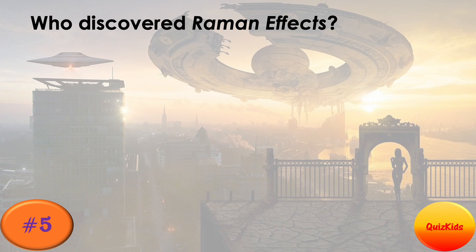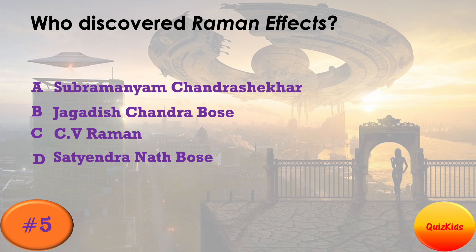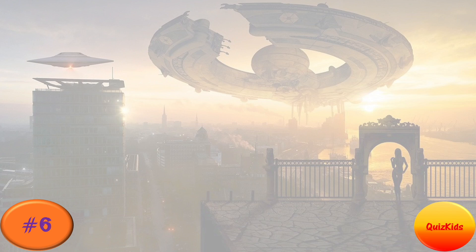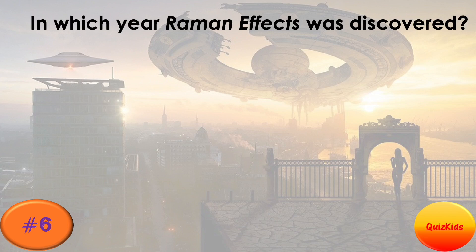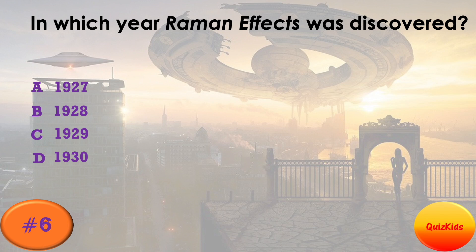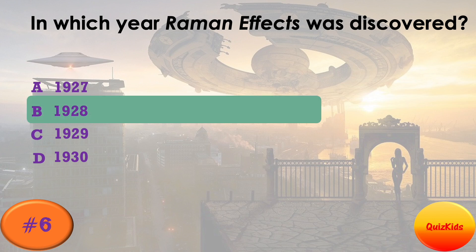Who discovered the Raman Effect? The right answer is Option C — C.V. Raman. In which year was the Raman Effect discovered? The right answer is Option B — 1928. The Raman Effect was discovered in the year 1928.